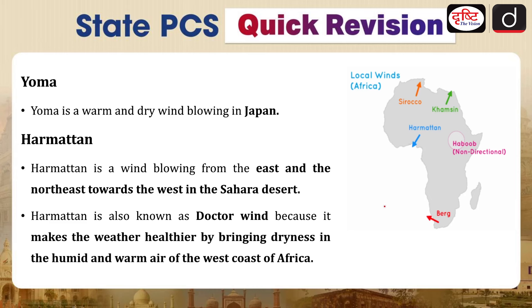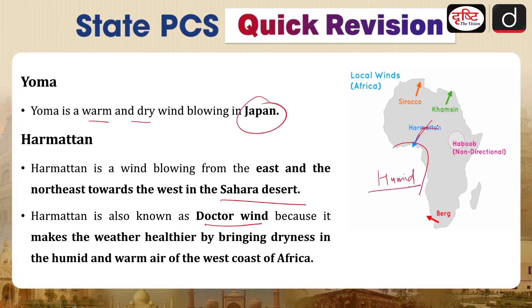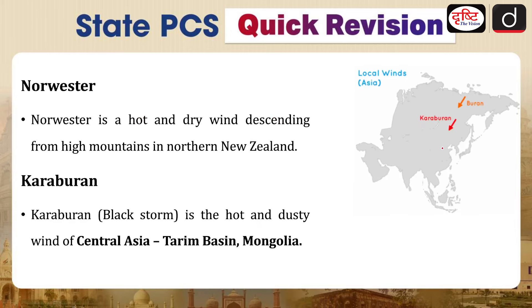Yoma — the name suggests it is found in Japan — is also a warm and dry wind blowing there. Harmattan is a wind blowing from the east and northeast towards the west across the Sahara Desert. Harmattan is also known as the 'doctor wind' because it brings dryness to the humid and warm air of the west coast of Africa, making the weather healthier and more pleasant. Please remember: Harmattan is the local wind known as the doctor wind.